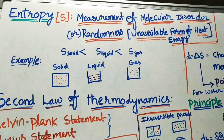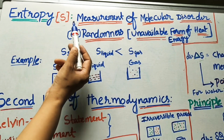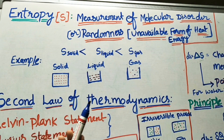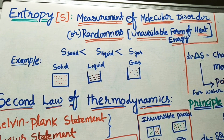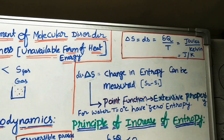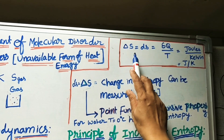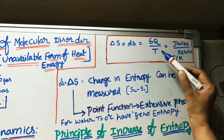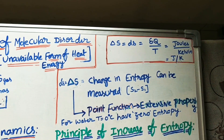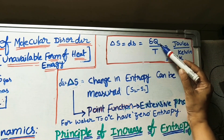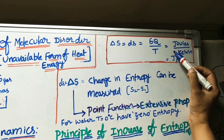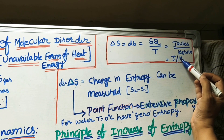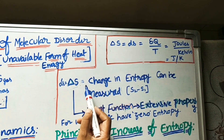Since it is difficult to measure disorder of molecules directly, we measure entropy in terms of change in entropy. Change in entropy is denoted by ΔS, and the formula is: ΔS = δQ / T, where δQ is the change in heat and T is the absolute temperature in Kelvin. Units of entropy are joules per kelvin.